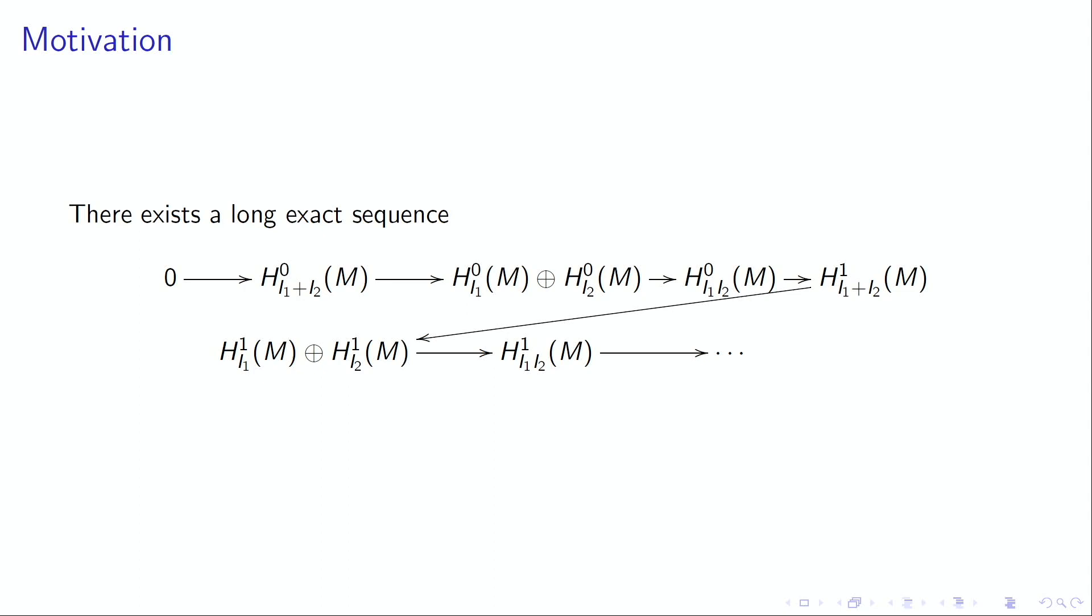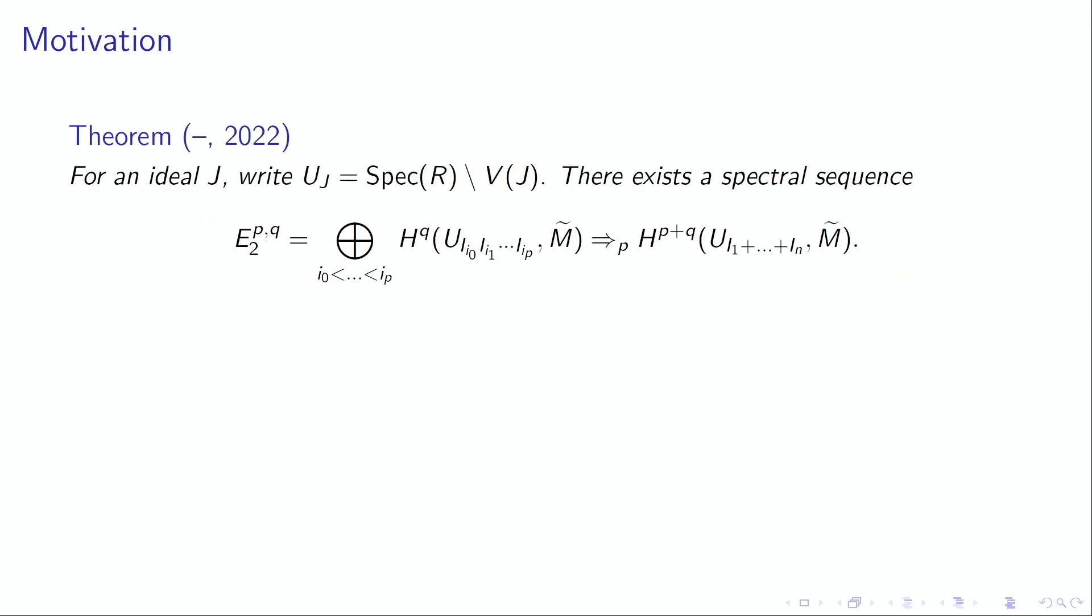We have the Mayer-Vietoris long exact sequence. It's very well known and relates cohomology supported in the sum of two ideals, cohomology supported in each ideal, and cohomology supported in the product or intersection of two ideals. But sometimes you need to work with more than two ideals.